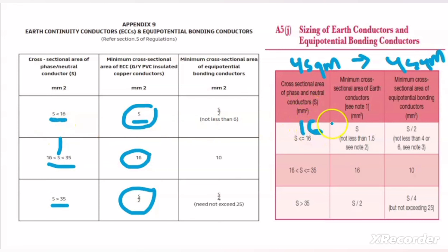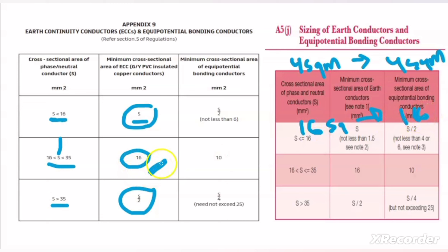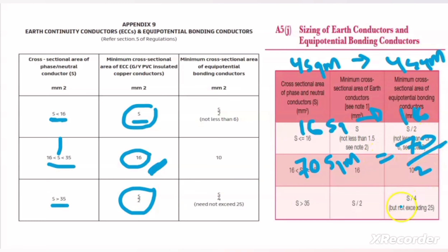When the conductor size is 16 mm² — between 16 and 35 — the ECC conductor size will be 16 mm². Now let us take another example. In this case, I have the phase conductor size of 70 mm². Then the ECC size will be half of the phase conductor size, so it will be 70 divided by 2, which equals 35 mm². So the ECC size will be 35 mm².